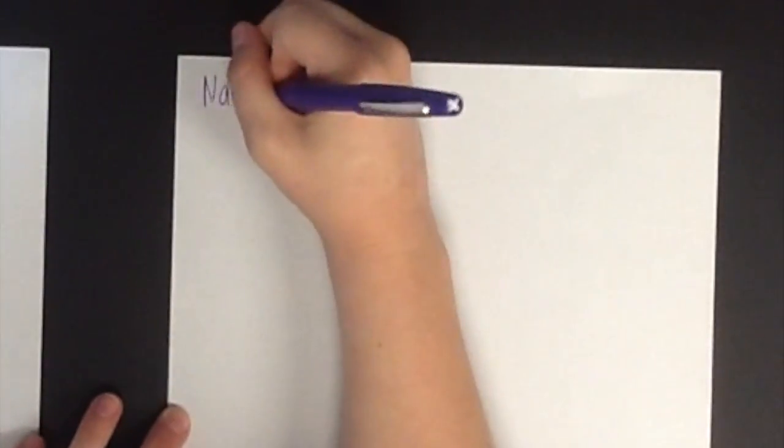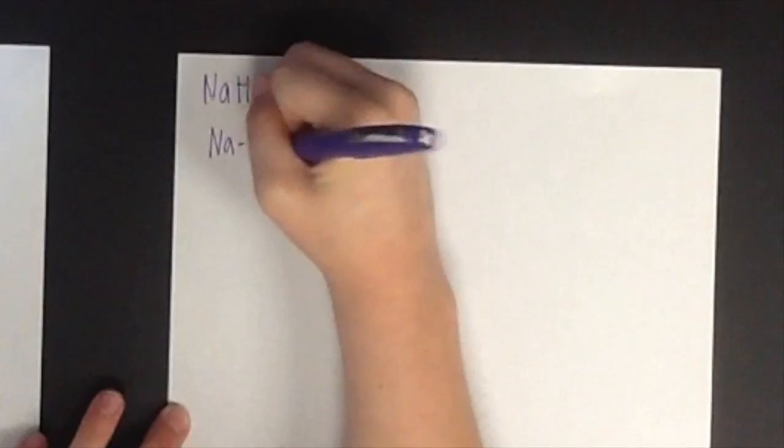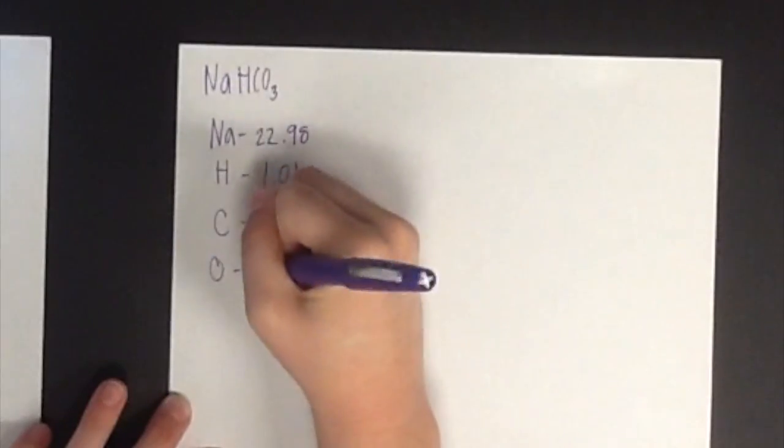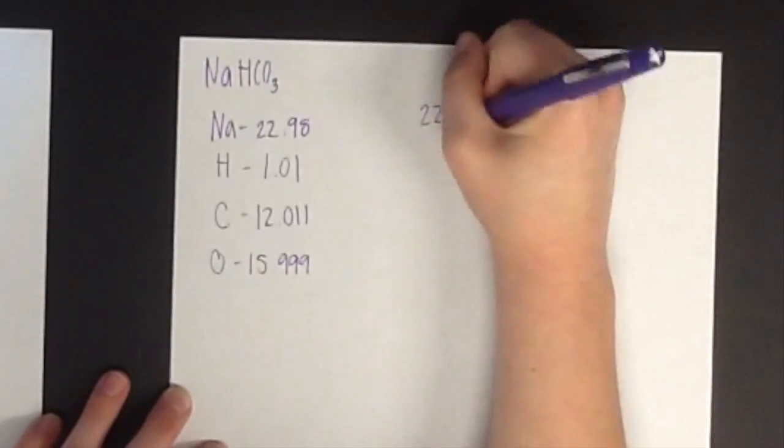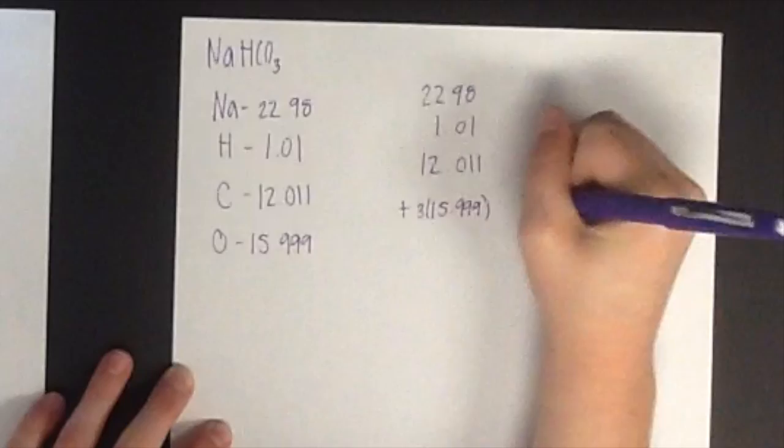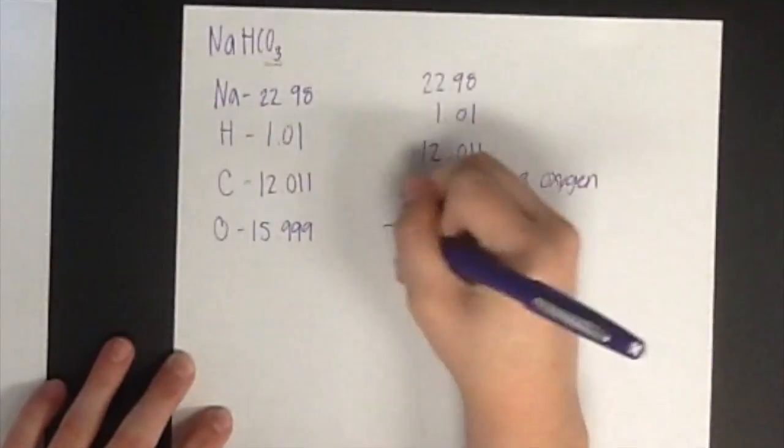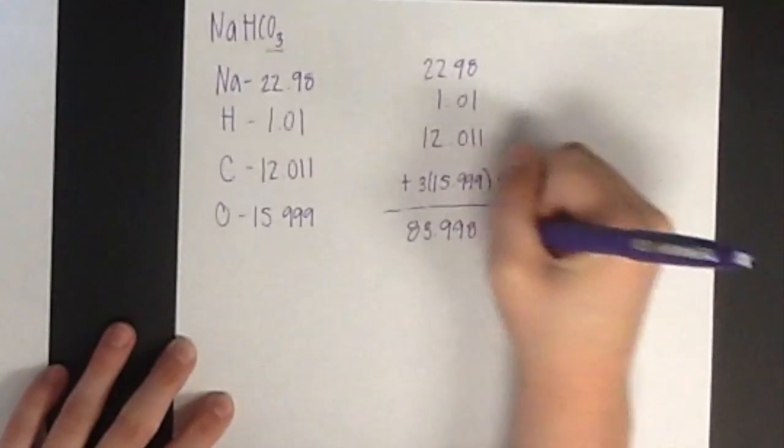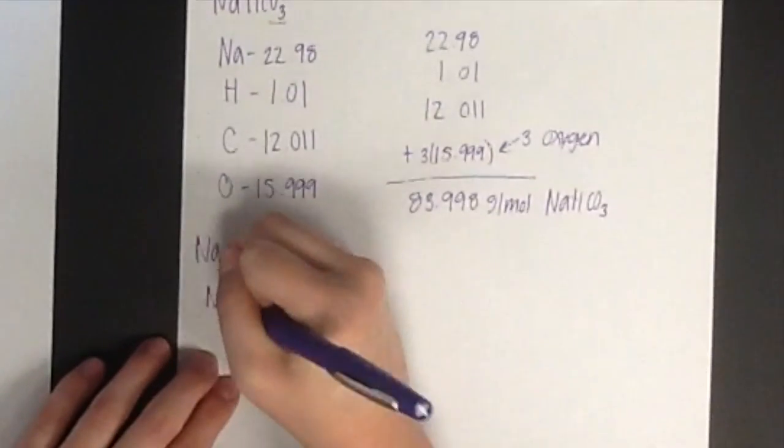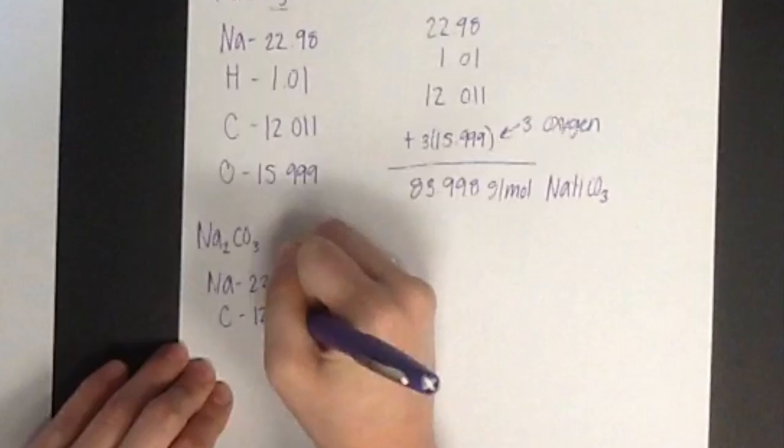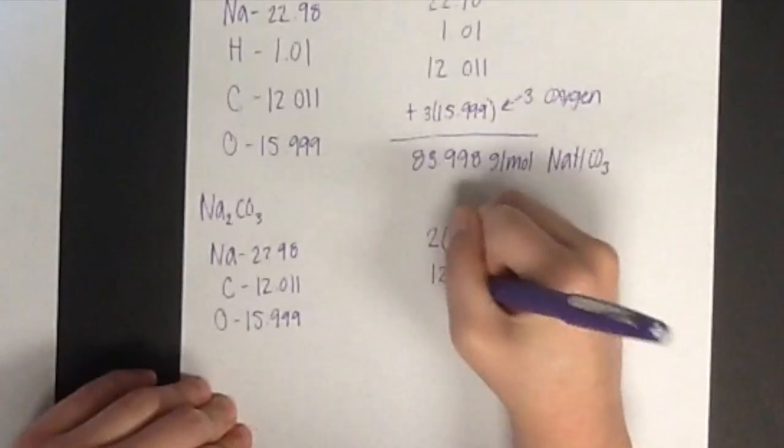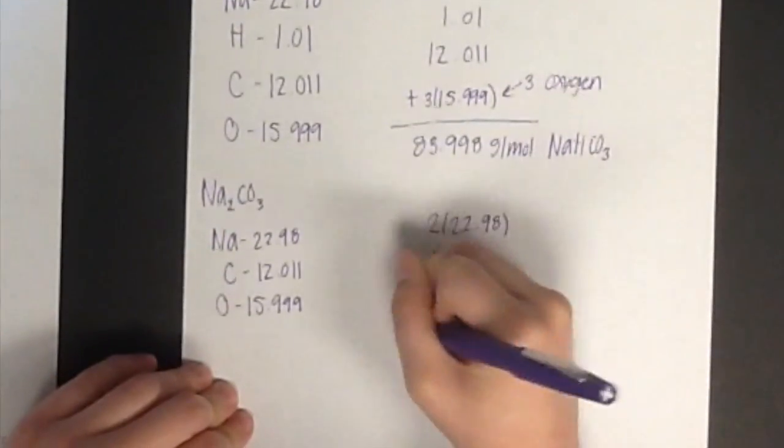For this lab, you will first need to know how to calculate the molar mass in the compounds you will be using. We will walk you through calculating the molar mass for NaHCO3. The molar mass for Na is 22.98 grams per mole. The molar mass for hydrogen is 1.01 grams per mole. The molar mass for carbon is 12.011 grams per mole. And the molar mass for oxygen is 15.999, which needs to be multiplied by 3 since there are 3 oxygen atoms. Add all of these up, and the total molar mass for NaHCO3 is 83.998 grams per mole. Do this same calculation for Na2CO3. The molar mass that you should calculate should be 105.968 grams per mole.